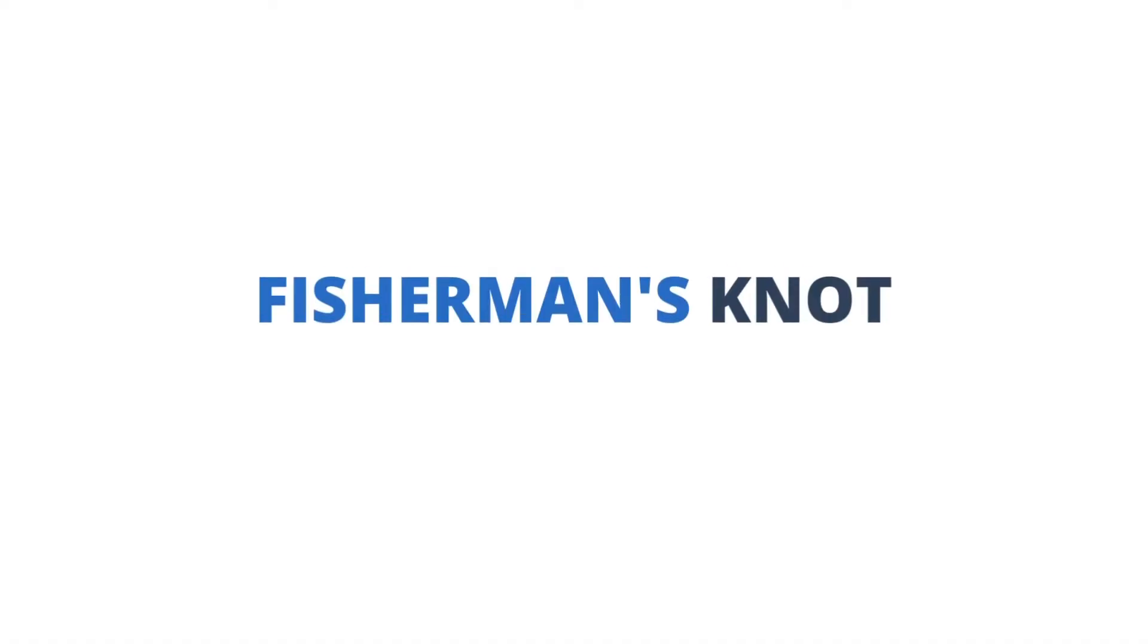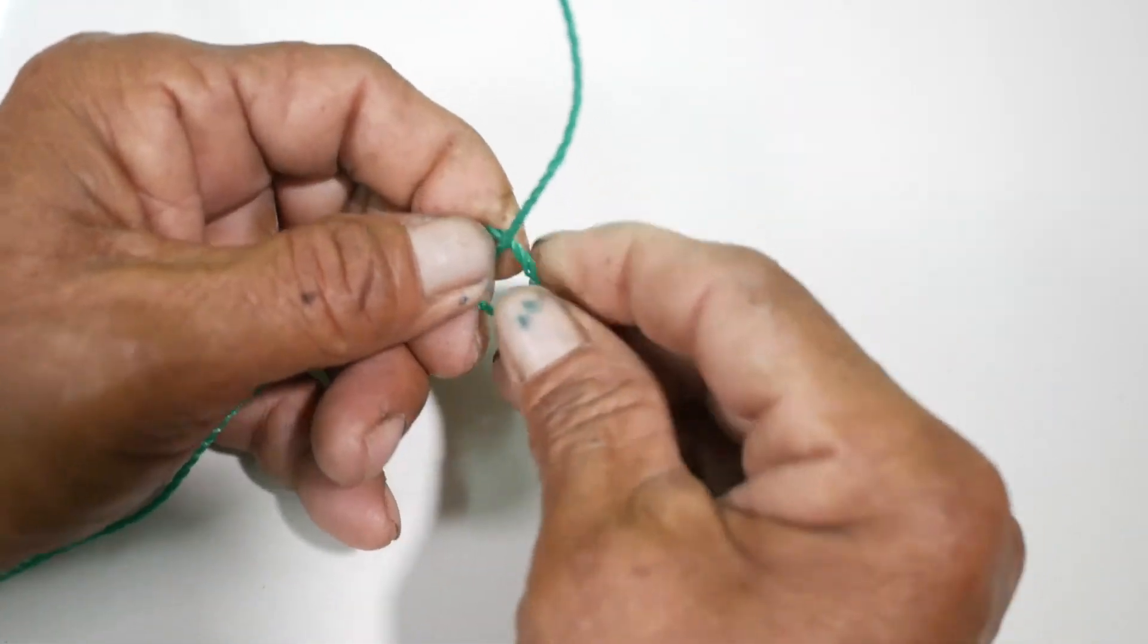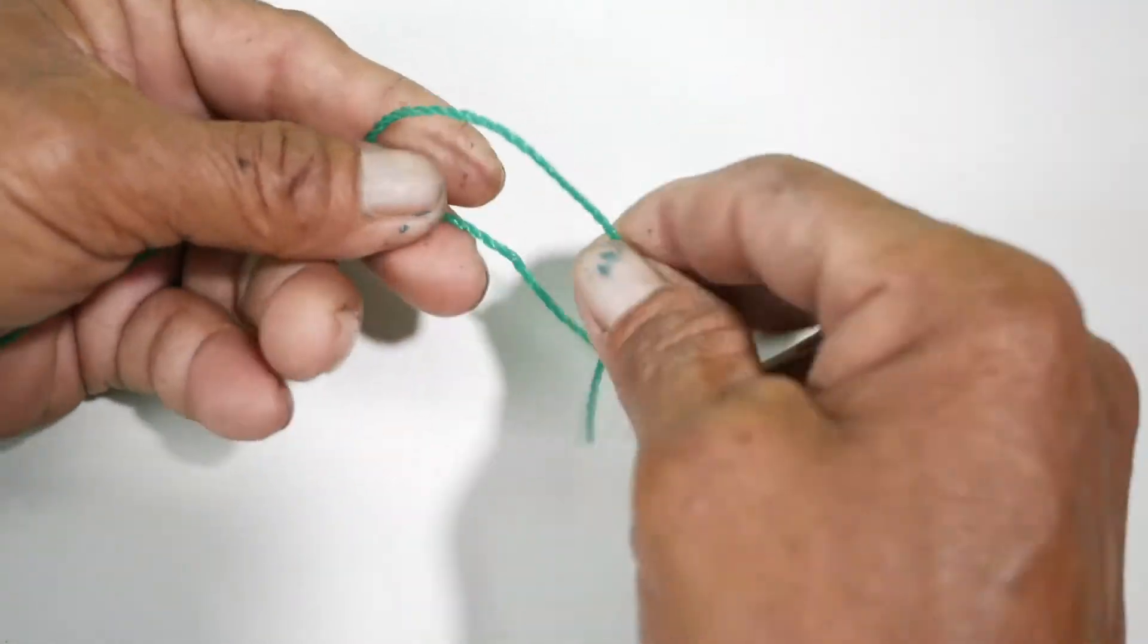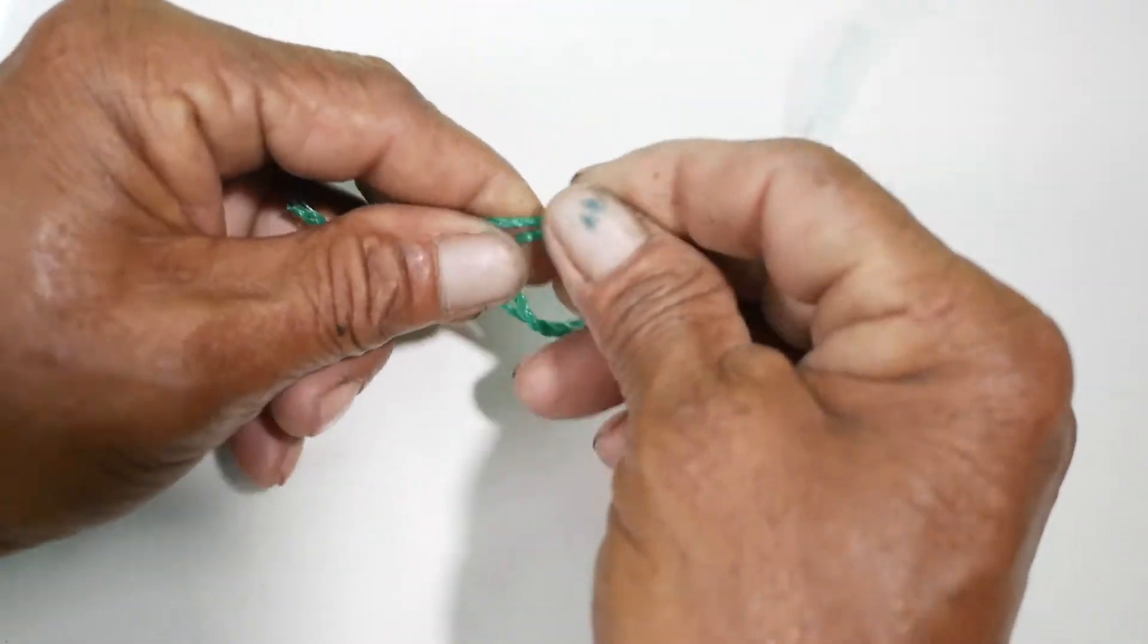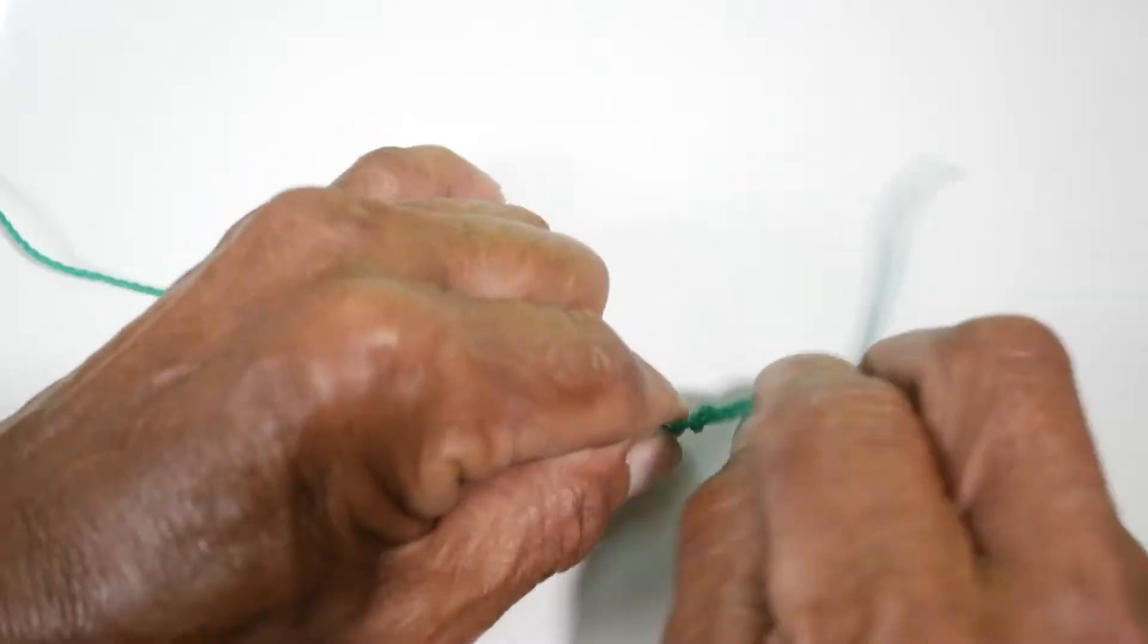Next is the fisherman's knot. Unlike the sheet bend, this knot is used to join two lines of equal diameter. This knot is simply composed of two overhand knots pushed against each other.